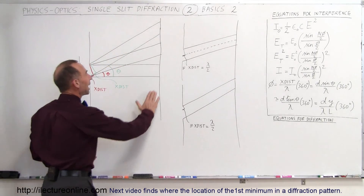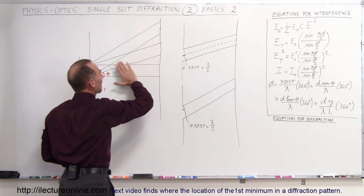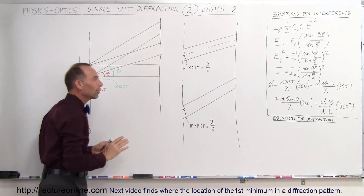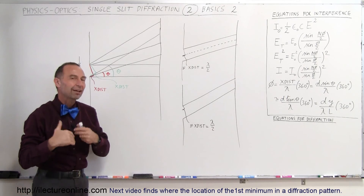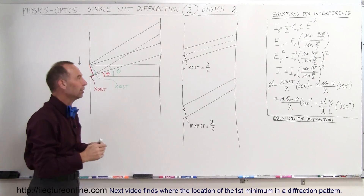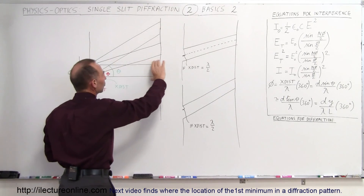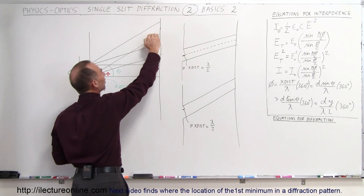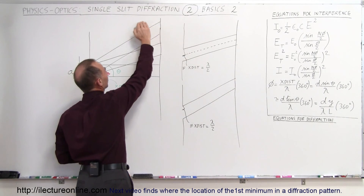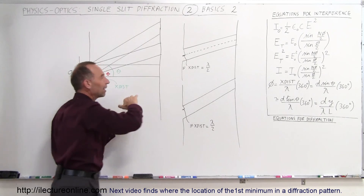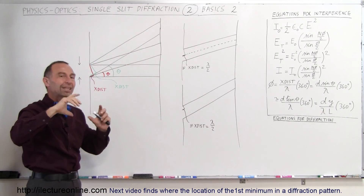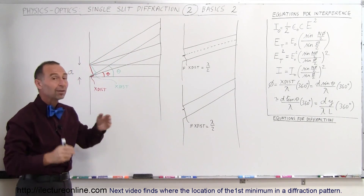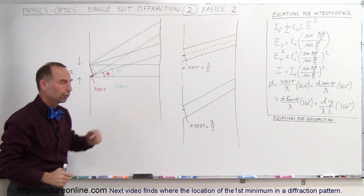Instead of seeing a simple bright spot that slowly diminishes in strength, we see a very interesting diffraction pattern, where we see a very strong central maximum, then it goes down to a minimum and to zero, then we see a secondary maximum, a third maximum and so forth. As you go further out, the intensity of those adjacent maxima decreases.